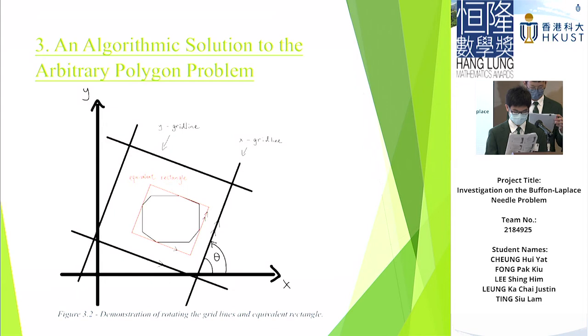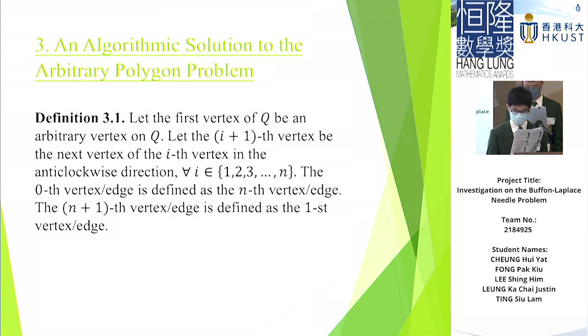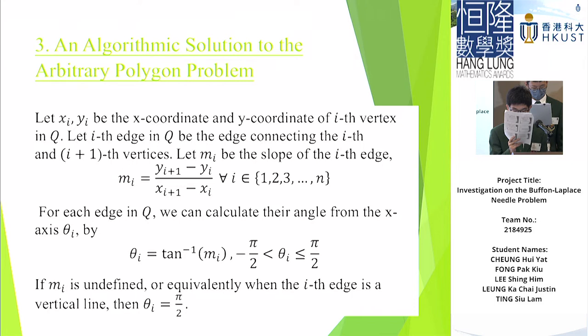In order to find the equivalent rectangle of Q for a specific theta, we will find the vertices which are the maximum and minimum values in the rotated x and rotated y directions. And then we can compare the slope of the two edges connecting the same vertex with the grid lines. And here is Definition 3.1. We define the vertices and edges and number the vertices from 1 to n. So, then we let m_i be the slope of the i-th edge, which we can refer to this.